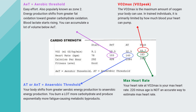At the top left, we have your aerobic threshold. This is an easy effort. If you've heard of zone 2, which is very popular these days, zone 2 is at your aerobic threshold or below. Here, energy production shifts from greater fat oxidation toward greater carbohydrate oxidation. Blood lactate starts rising. Because this is a low intensity, you can accumulate a lot of volume below your aerobic threshold. The majority of your cardiovascular training should be at this intensity or below if you're doing a lot of cardio.